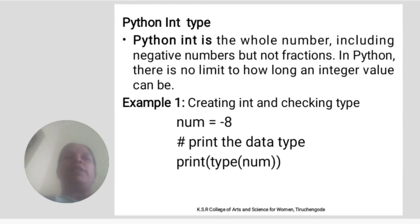Python int type. Python int is the whole number, including negative numbers but not fractions. In Python, there is no limit to how long an integer value can be. Example: creating int and checking type, num equal to minus 8, print type of num.